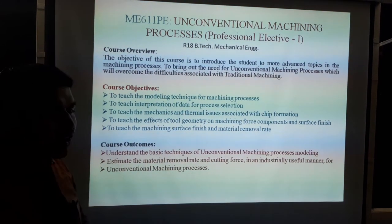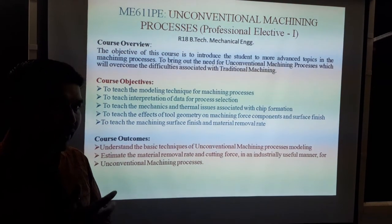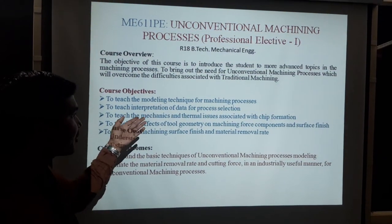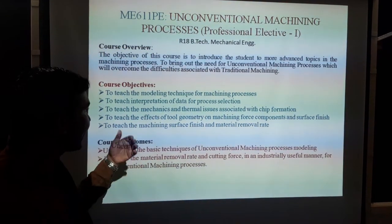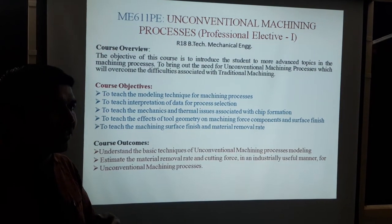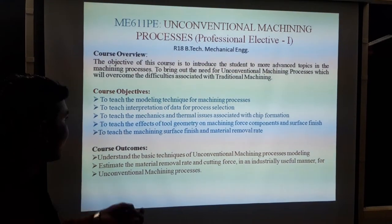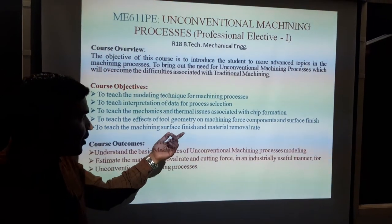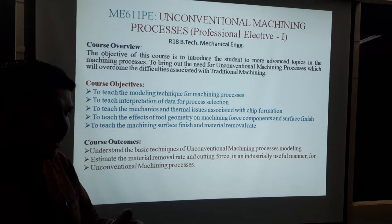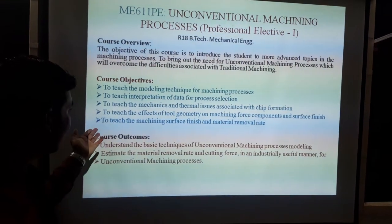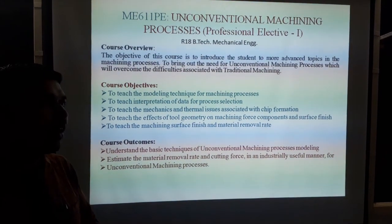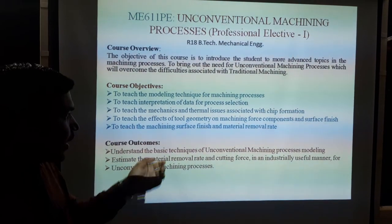Coming to course objectives - there are 5 points, here learning 4. First: to teach the modeling technique and machining processing. Second: to teach the interpretation of data processing and selection process. Third: to teach the mechanics and thermal issues associated with chip formation. Chip formation has 3 types: continuous chip formation, discontinuous chip formation, and a third type. Fourth: to teach the effect of tool geometry and machining force on component and surface finishing. You can achieve good processing, surface roughness, and finishing. Fifth: to teach machining, surface finishing, and material removal process - whether low, high, or medium material removal rate using different parameters.